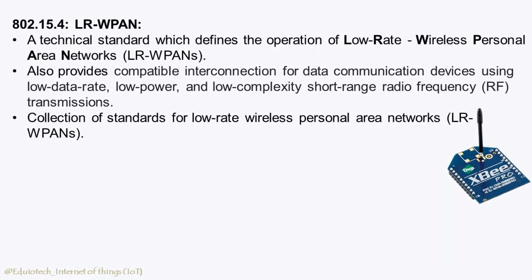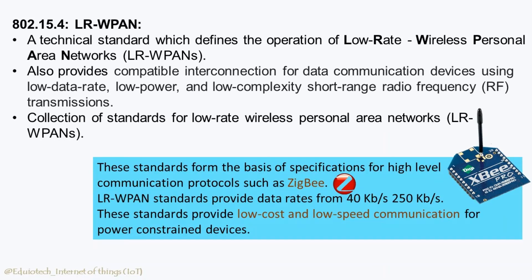802.15.4 is a technical standard which defines the operation of low-rate wireless personal area networks. It also provides compatible interconnection for data communication devices using low data rate, low power, and low-complexity short-range RF transmissions. These standards form the basis of specifications for high-level communication protocols such as Zigbee. It provides data rates from 40 Kbps to 250 Kbps, making it suitable for low-cost and low-speed communication for power-constrained devices.